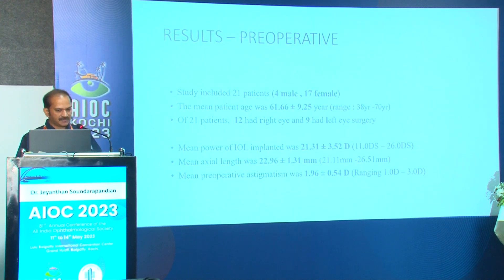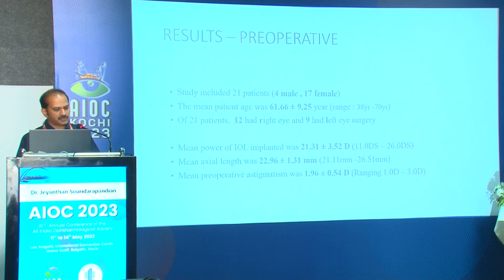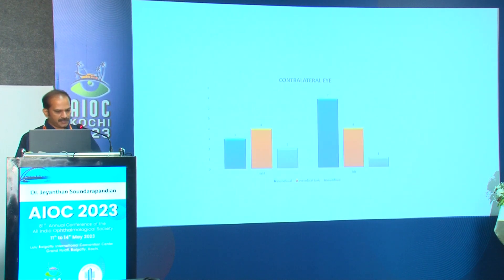The study included 21 patients — four male and 17 female — with a mean age of 61. Of the 21 patients, 12 had their right eye operated and nine had their left eye operated. The mean IOL power was 21 diopters, mean axial length was 22 mm, and mean preoperative astigmatism was 1.96 ± 0.5 diopters.